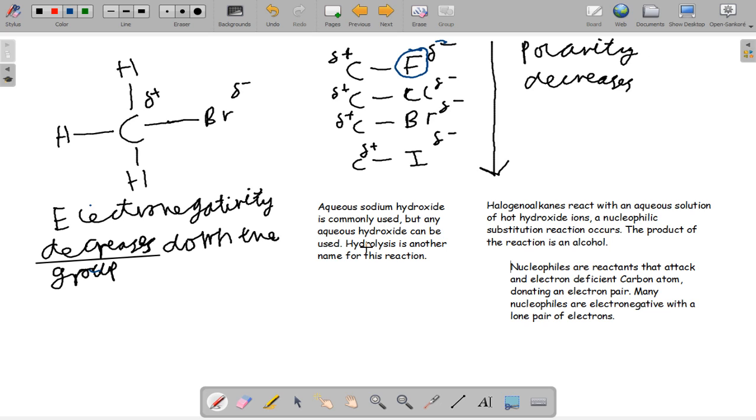There is an electron deficient carbon atom because one of the bonding electrons in carbon is used during the bond. They react with nucleophiles in substitution reactions. A nucleophile is a reactor that attacks the electron deficient carbon atom, donating an electron pair. They contain an electronegative atom with a lone pair of electrons. That could be H2O because it has two lone pairs, OH- or ammonia with one lone pair.